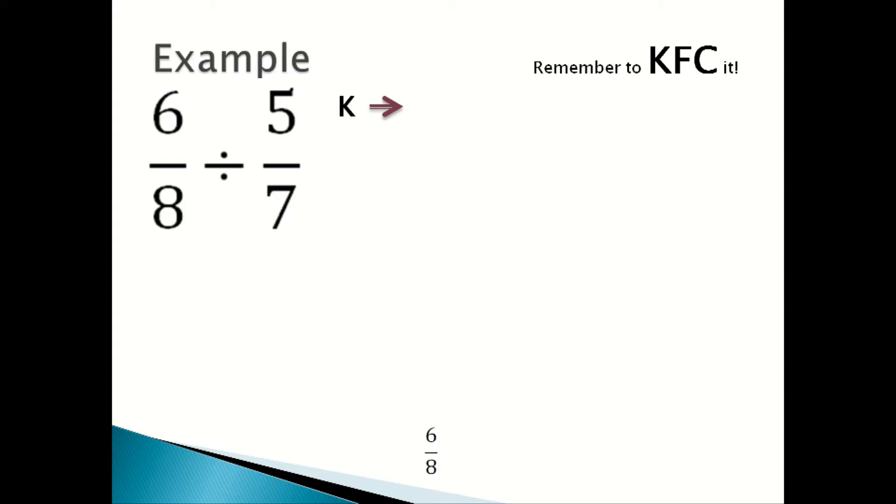Keep the fraction the same, so you keep the first fraction which is 6/8 the same, and you flip the second fraction to become 7/5, and you change the sign to become a multiplication sign. So the question becomes this: 6/8 times by 7/5.